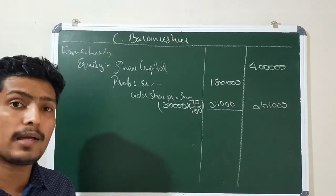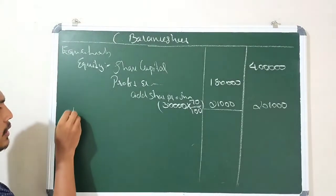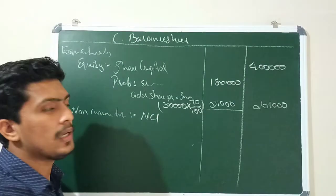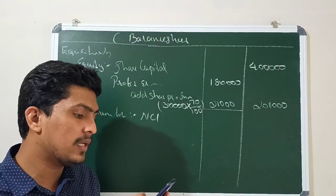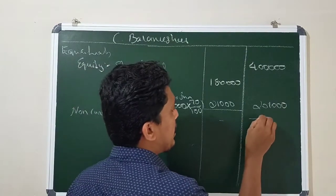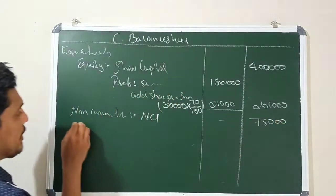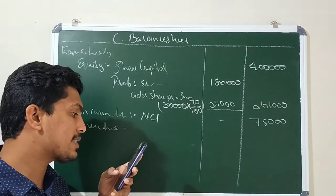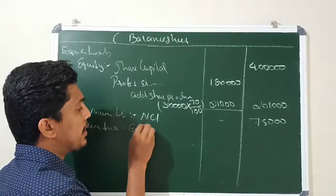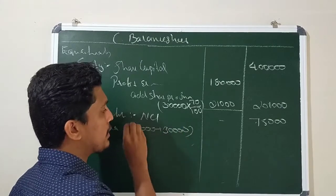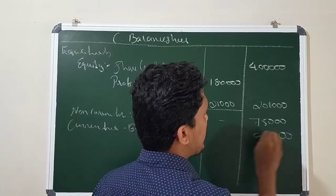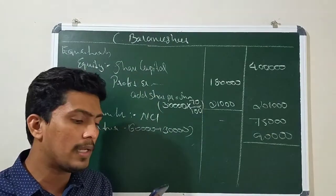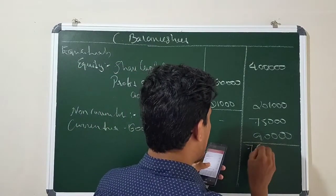Under current liabilities, we add the parent and subsidiary company amounts together: parent company 60,000 and subsidiary company 30,000, giving total current liabilities of 90,000. NCI of 75,000 is listed separately. So the total equity and liabilities comes to 7,66,000.